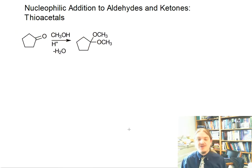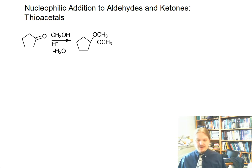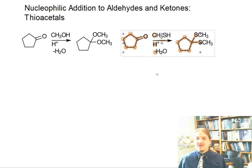So, for example, if you have cyclopentanone and you react it with acidic methanol while removing water, you're going to get the dimethyl acetal. If you do the same reaction but substitute methanethiol for methanol, you'll get the thioacetal.